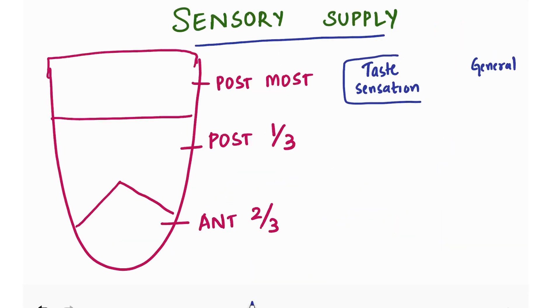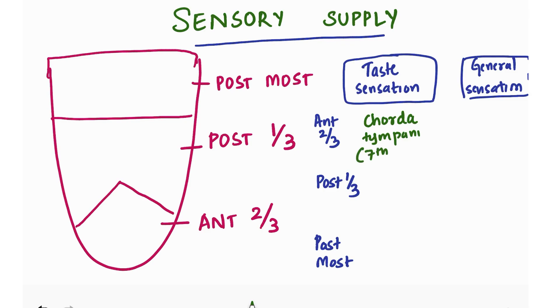Coming to the sensory supply, we need to see the supply for taste sensation as well as general sensation. For anterior two-third, taste sensation is from the chorda tympani, which is a branch of seventh nerve or facial nerve. General sensation for anterior two-third is by the lingual nerve, which is part of the third division of trigeminal nerve, the mandibular nerve.